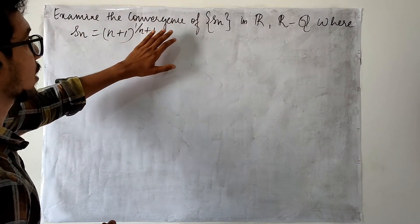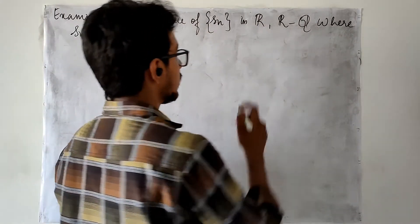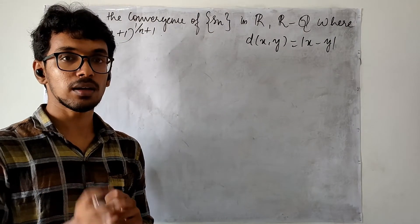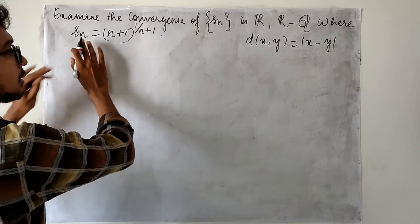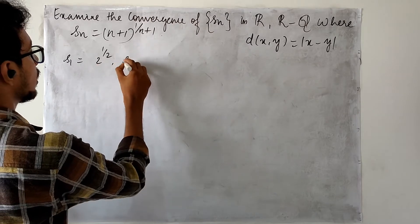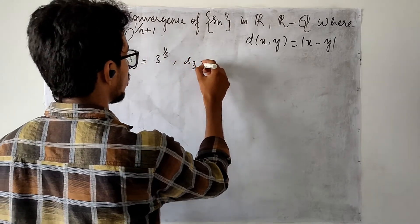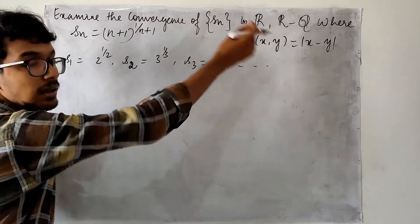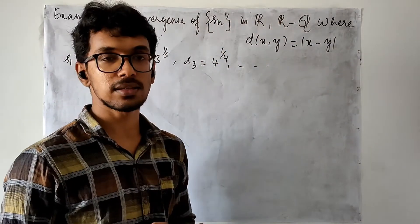Now in this problem, we are asked to check the convergence of the sequence in the space of real numbers as well as in the space of irrational numbers. The metric is not specified, which means we are considering the standard Euclidean metric. The terms of the sequence are: S1 is (1+1)^(1/2) = 2^(1/2), S2 is 3^(1/3), S3 is 4^(1/4), and so on. All the terms of Sn are irrational numbers, hence you may treat this as a sequence in the space of real numbers as well as in the space of irrational numbers.